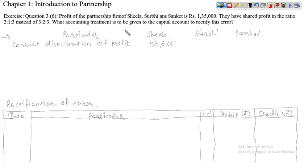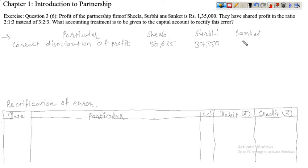Surbhi ka aega Rs 33,750. And the last one is Sanket — uska abhi kitna hai, third part hai, so 1,35,000 multiplied by 3 divided by 8, so uska proportion aega Rs 50,625.